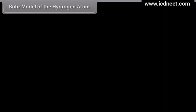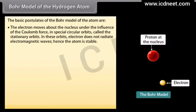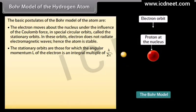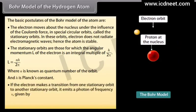The basic postulates of Bohr's model of the atom are: the electron moves about the nucleus under the influence of the Coulomb force in special circular orbits called stationary orbits, in which the electron does not radiate electromagnetic waves, hence the atom is stable. The stationary orbits are those for which the angular momentum L of the electron is an integral multiple of h/2π: L = nh/2π, where n is the quantum number and h is Planck's constant. If the electron makes a transition from one stationary orbit to another, it emits a photon of frequency ν = (Ei − Ef)/h.